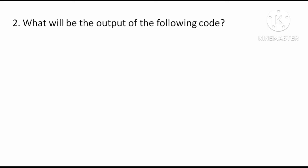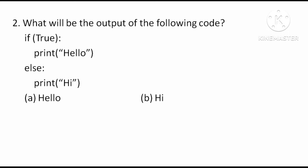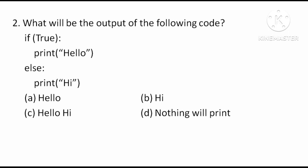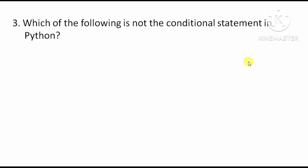Next question: what will be the output of the following code? Option A: hello, Option B: hi, Option C: hello hi, Option D: nothing will print. To run this code, the condition here becomes true, and since the condition is true, only this statement will print. So the output will be 'hello', therefore Option A is correct.